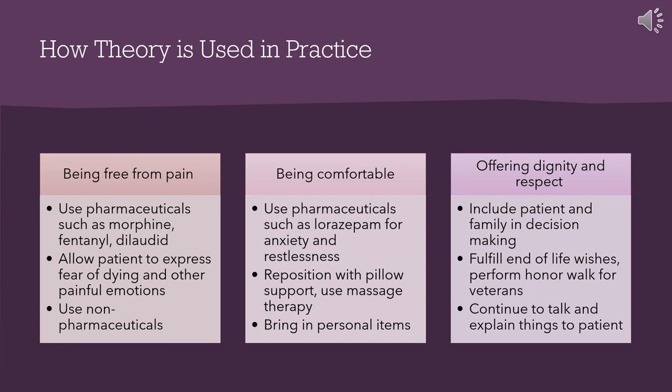Patients' and families' main goal at end-of-life is to be comfortable and free from pain. The Peaceful End-of-Life Theory is used in practice by promoting freedom from pain, comfort, and dignity and respect. Being free from pain means using pharmaceuticals such as morphine, fentanyl, and dilaudid, as well as non-pharmaceuticals such as repositioning, and allowing the patient to express their fear of dying and other painful emotions. Being comfortable means using pharmaceuticals like lorazepam for anxiety and restlessness, repositioning with pillows, massage therapy, and bringing in personal items meaningful to the patient and family. Offering dignity and respect means including the patient and family in decision-making, continuing to talk and explain things even if the patient is unresponsive, fulfilling end-of-life wishes, and performing an honor walk for veterans.